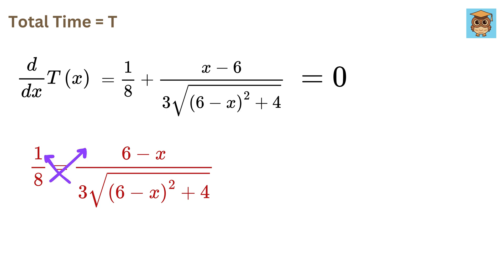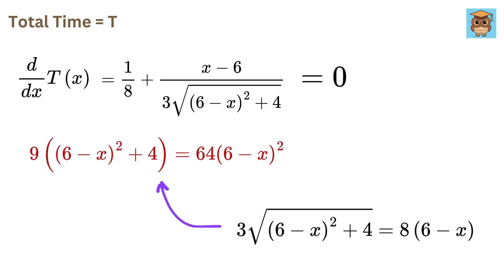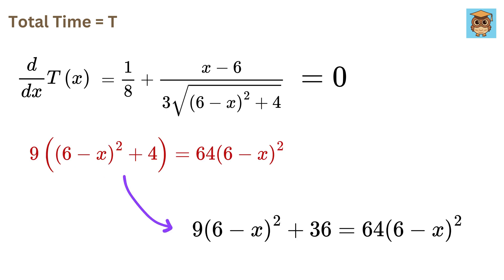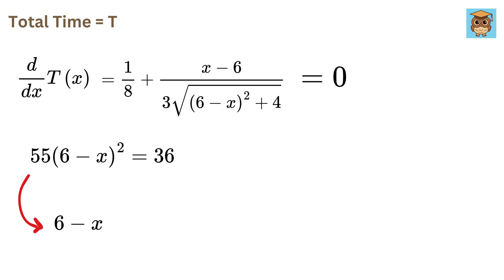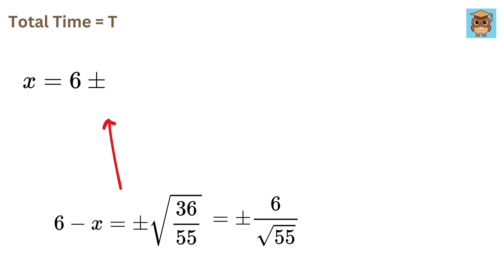We get this. Cross-multiply to get this. Then square both sides to get this. Expand it to get this. And now rearrange it to make it 55 times 6 minus X whole squared equals 36, and thus 6 minus X equals plus minus square root of 36 over 55, or 6 over root 55. Thus, X equals 6 plus minus 6 over root 55.